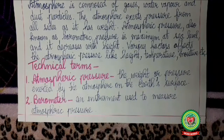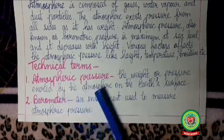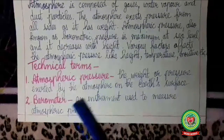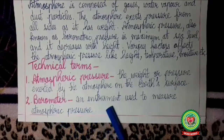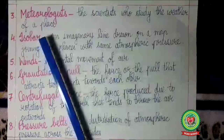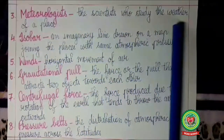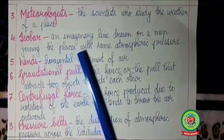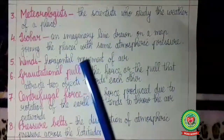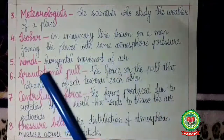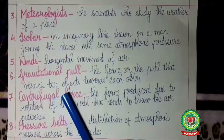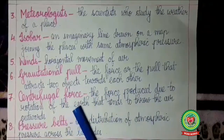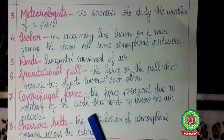Now let us go through the technical terms for today. Number one — atmospheric pressure: the weight or pressure exerted by the atmosphere on the earth's surface is called atmospheric pressure. Number two — barometer: an instrument used to measure atmospheric pressure. Meteorologist: the scientist who studies the weather of a place. Isobar: an imaginary line drawn on a map joining places with the same atmospheric pressure. Wind: horizontal movement of air. Gravitational pull: the force that attracts two objects towards each other.